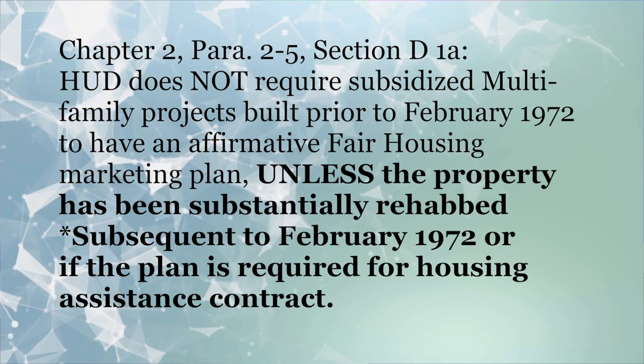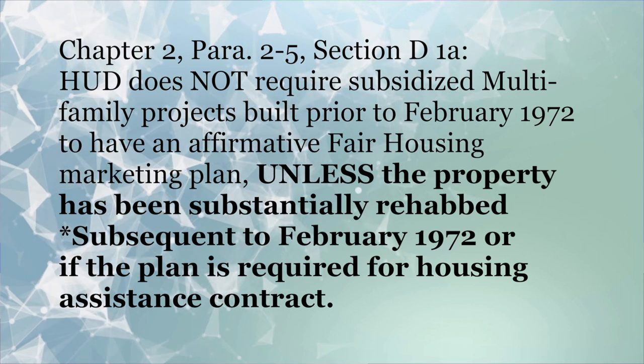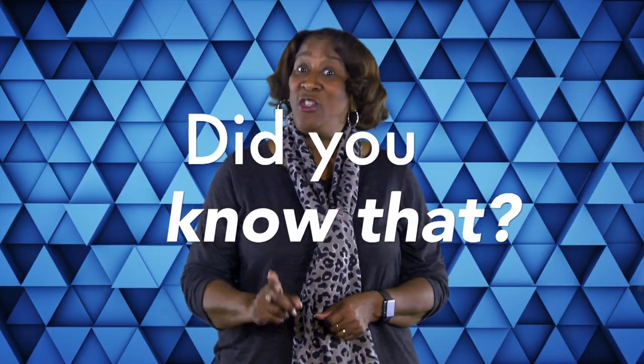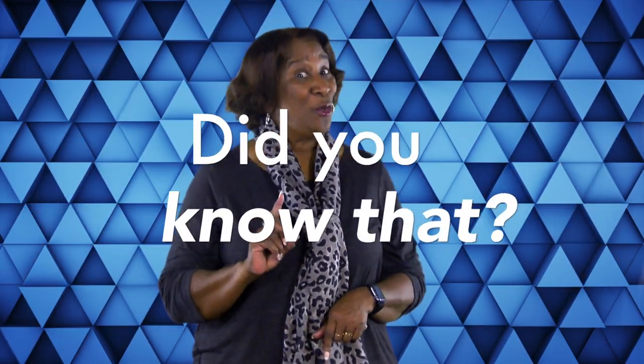Or if the plan is required for a housing assistance contract. However, these owners are still required to affirmatively market their units to those least likely to apply. The second tip can be found under Section 504 of the Rehabilitation Act of 1973.